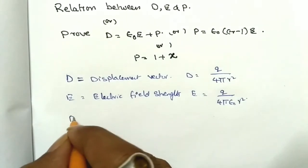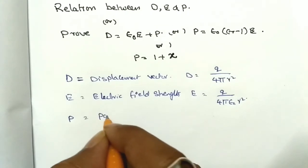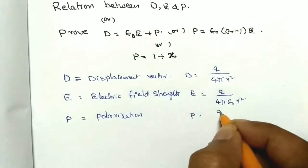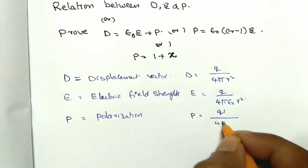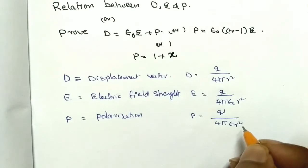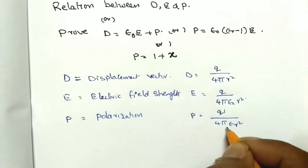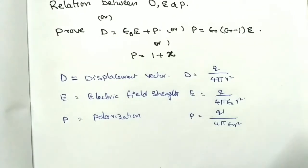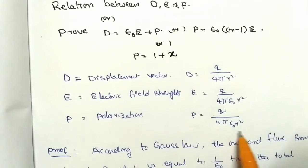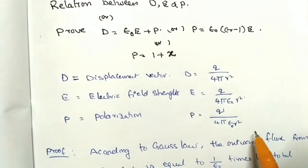Next, P is the polarization. Polarization P is equal to Q dash by 4 pi epsilon naught into r squared.